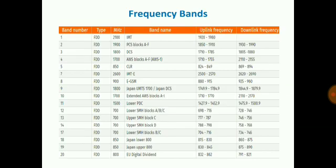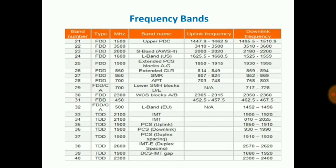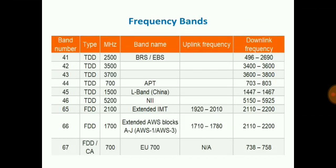These are the frequency bands used across the globe. In our network we are using FDD-1800 and FDD-2100 in mixed mode configuration. The band numbers start from 1 till 67, and these are the frequencies used across the globe.